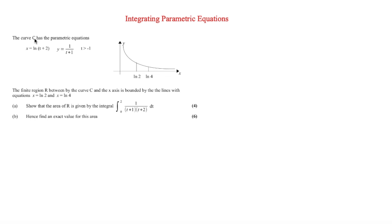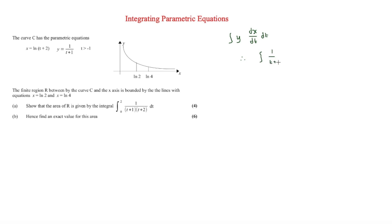The next question has a curve C with parametric equations x equals ln(t plus 2) and y equals 1 over (t plus 1). We must show that the area of region R, bounded between ln 2 and ln 4, is given by the integral from 2 to 0 of 1 over (t plus 1) times (t plus 2). We start by writing the integral in the same form as before: the integral of y times dx/dt dt.